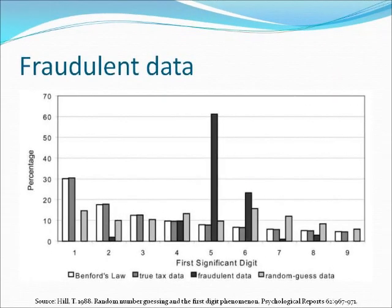The digit patterns of fraudulent data do not conform to the expected frequencies of Binford's law. As with the previous graph, the white bars indicate the expected values from Binford's law for the first digits. Bars with different colors indicate the proportion of actual data sets for the first digits. The data sets include true tax data from 169,662 IRS model files by Nagrini, fraudulent tax data taken from a 1995 Kings County, New York District Attorney's Office study by Hill, and random guess data by Hill. The first digit distribution of true tax data confirms to Binford's law.